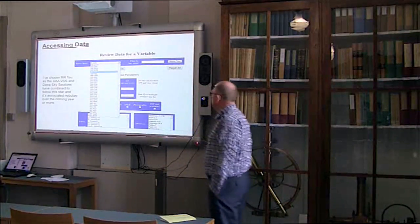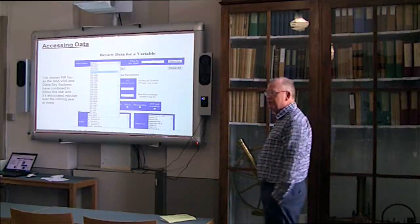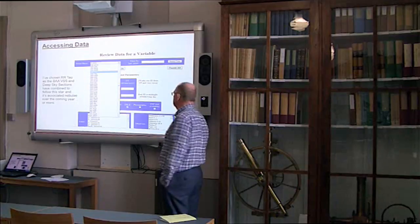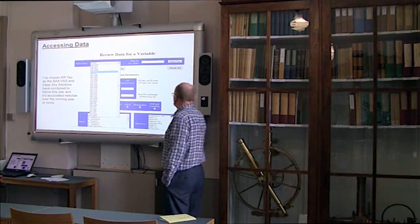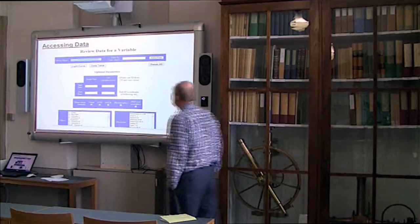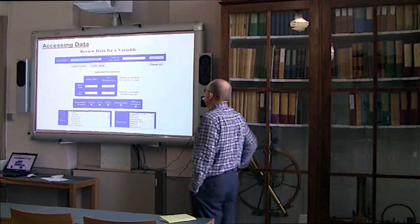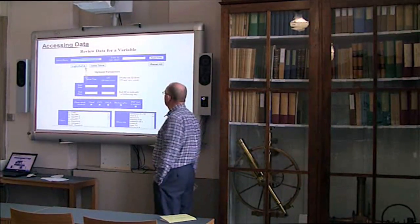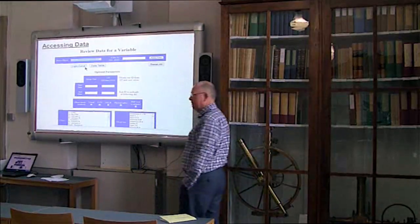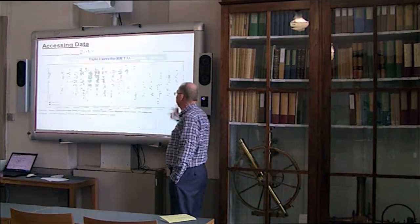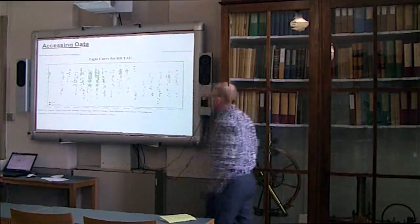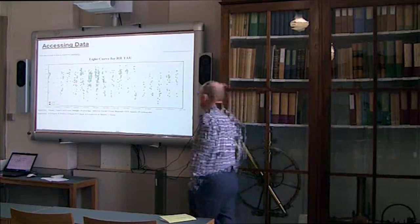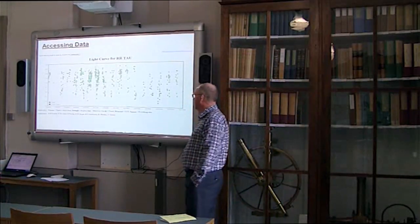So we'll pick RR Tori, which I explained was the star of the year. So here is the generated light curve. That's a light curve for RR Tori, and it gives details of who the observers were.